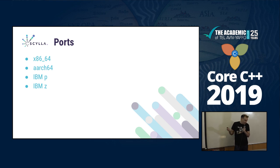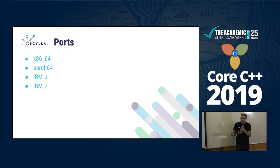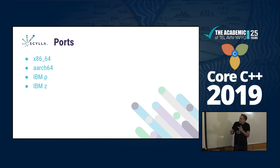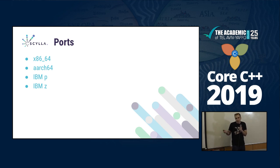C-Star supports x86, ARM, and IBM Power (pSeries) and z (mainframe) architectures. Writing portable applications is much easier these days because C++11 eliminated many portability roadblocks — it would have been a lot more difficult in C++98.